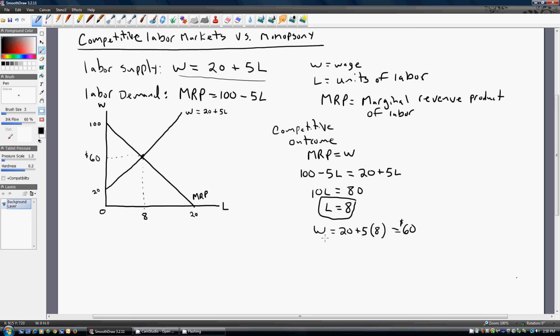Now under monopsony, the monopsonist is going to maximize profits by hiring the quantity of labor consistent with this condition. The marginal revenue product equal to the marginal cost of labor.